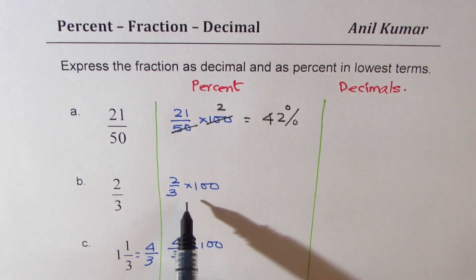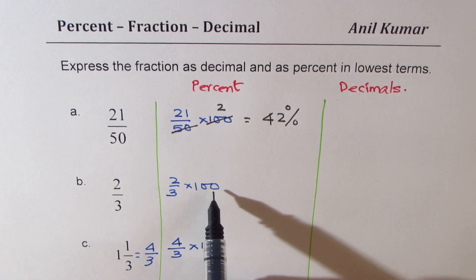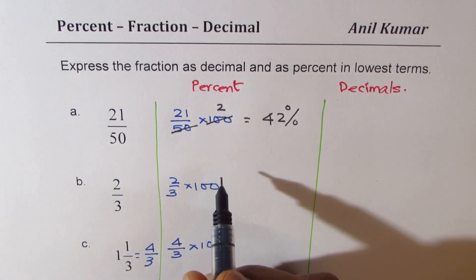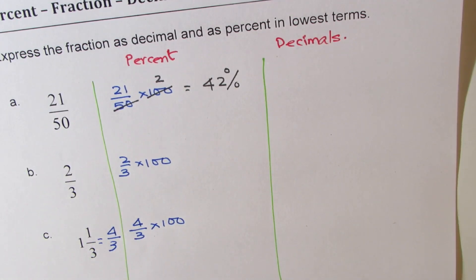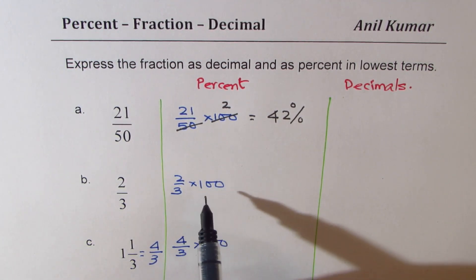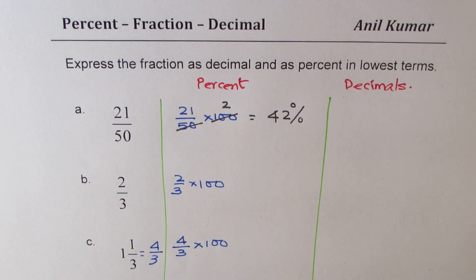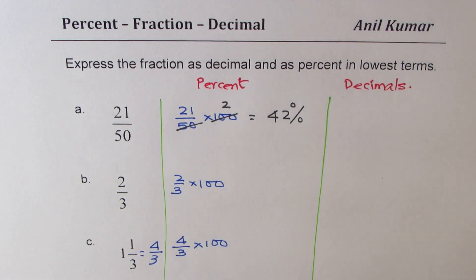In this case we will get a decimal number: 200 divided by 3. You could do it using a calculator. Let us divide 200 by 3 to get our answer. So it is 66.66 recurring.